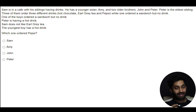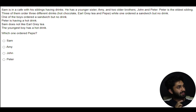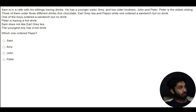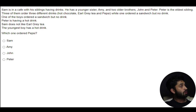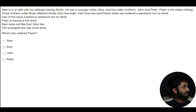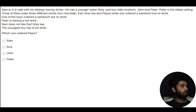How do I tackle this question? There are two methods, both quite similar. So: Sam is in a café with his siblings having drinks. He has a younger sister Amy and two older brothers John and Peter. Peter's the eldest sibling. Three of them order three different drinks — hot chocolate, Earl Grey tea, and Pepsi — while one ordered a sandwich but no drink. Peter is having a hot drink. Sam does not like Earl Grey tea. The youngest boy has a hot drink. Which one ordered Pepsi?